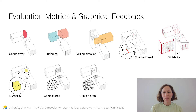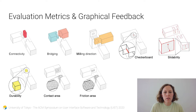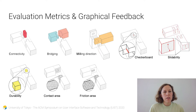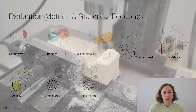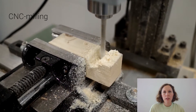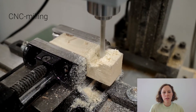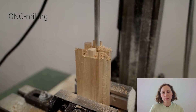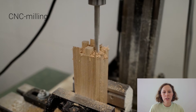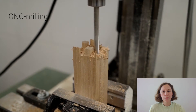These metrics can be calculated in real-time by analyzing the 3D matrix of integers, which is the underlying geometric representation. This is what the CNC milling looks like. This method of fabrication has the advantage that it is automated, it is very precise, and it's also customizable.